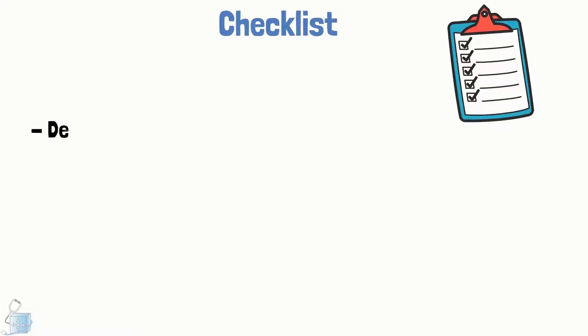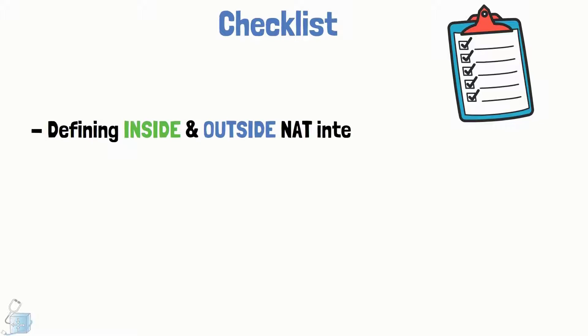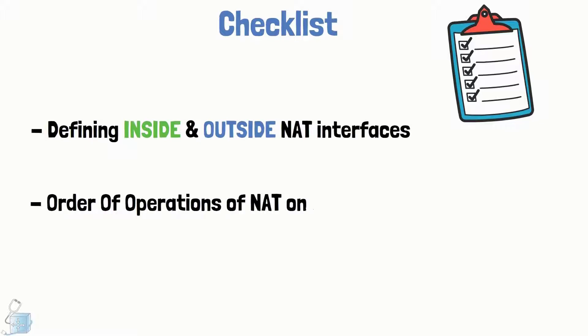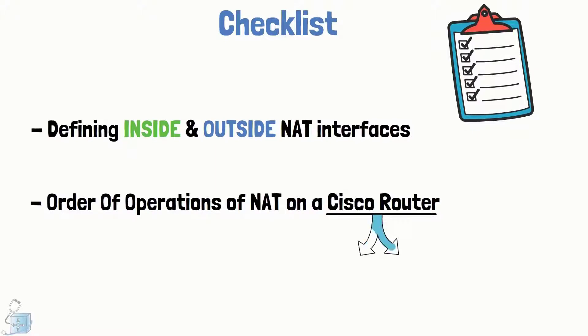Going through the checklist, we will first understand how to define the inside and outside interfaces on a Cisco router. Secondly, we will have a look at the order of operations of NAT in IOS or IOS XE devices.